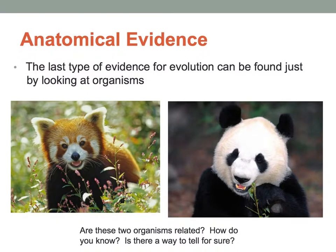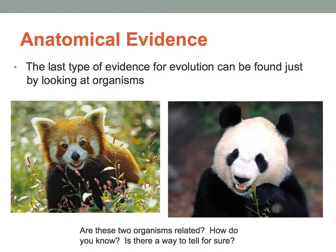Anatomical evidence — scientists use anatomical features to support the idea of evolution. Looking at a red panda and a giant panda, you might think the red panda is related to a raccoon because their features look similar. Anatomical features can be deceiving. The use of DNA evidence has allowed scientists to determine how closely related organisms actually are and not just rely on anatomical evidence to support the idea that they descended from common ancestors.